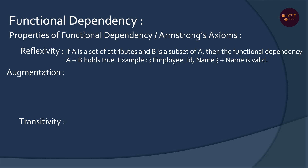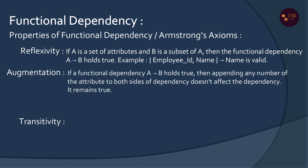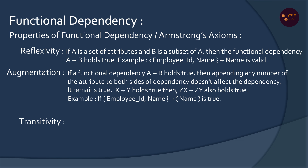Next, Augmentation. If X determines Y, then adding the same attribute Z to both sides, XZ determines YZ is also true. That means adding an attribute to both sides will not affect the dependency. For example, Employee ID determines Name, so Employee ID and Name together also holds. This is Augmentation.